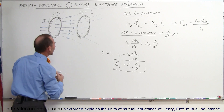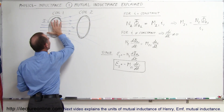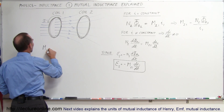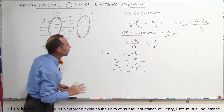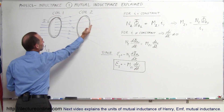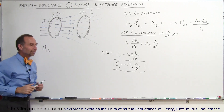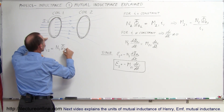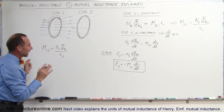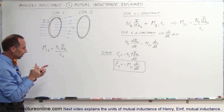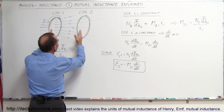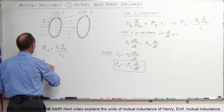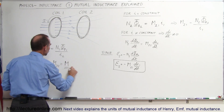We can turn the tables around. If a current is now driven in the second loop with no current in the first, there is still mutual inductance in the opposite direction. The mutual inductance M21 on loop one caused by loop two equals the number of coils in the first loop times the flux through the first loop caused by the second loop, divided by the current in the second loop. It turns out that M12 and M21 are identical — as long as the shape, size, and location of the two coils are unchanged. So we simply call it M, the mutual inductance, with no subscript needed.